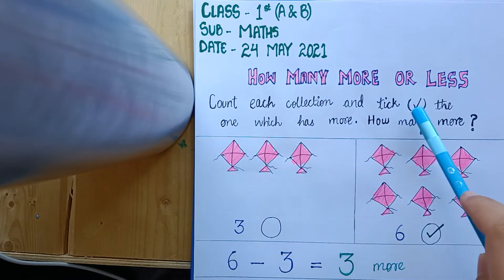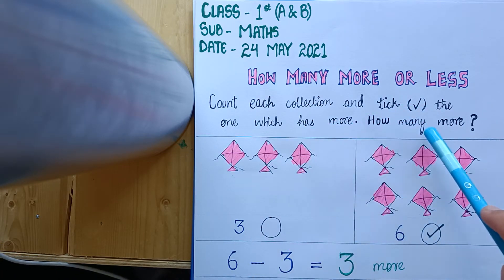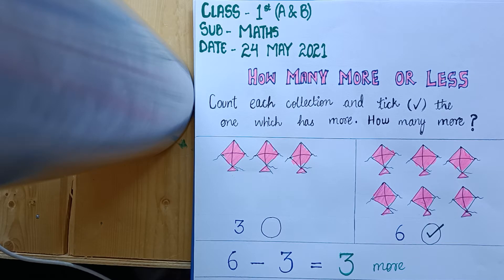Count each collection and tick the one which has more. How many more? We need to count the things, and in whichever collection there are more things, we have to tick it. Then we have to tell how many more things there are. A collection is a group of things.